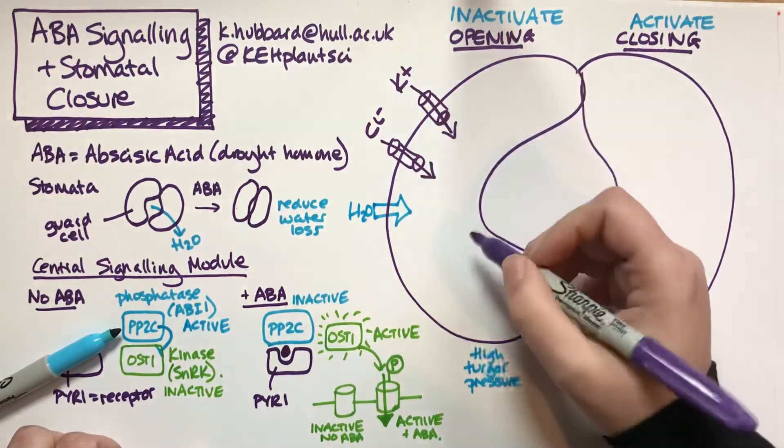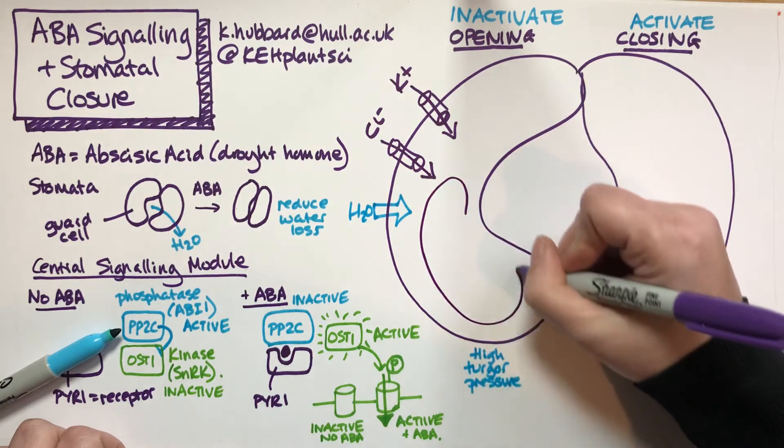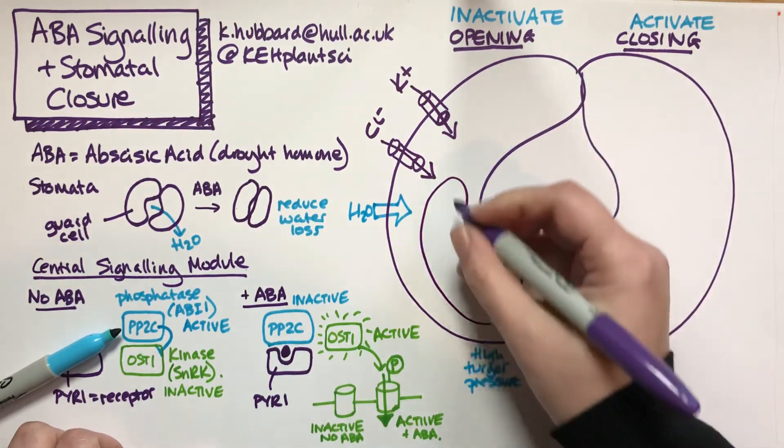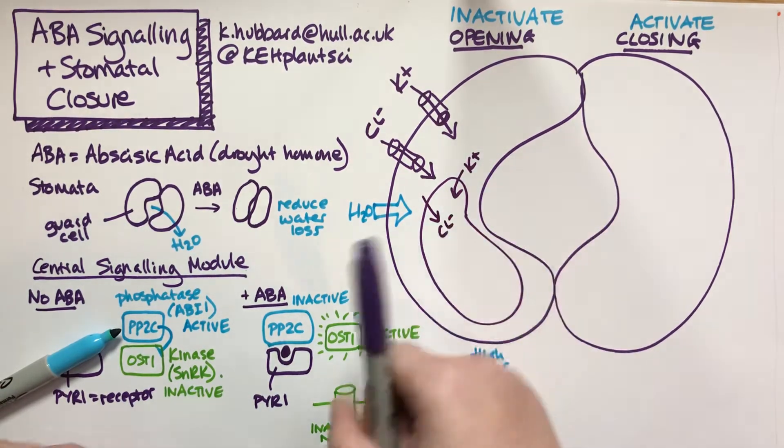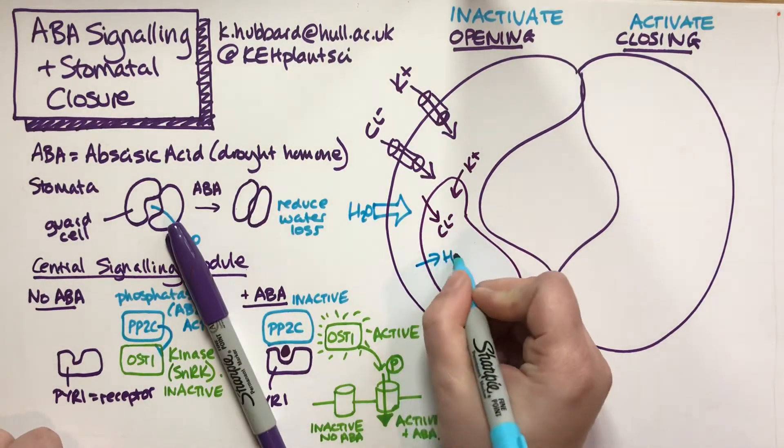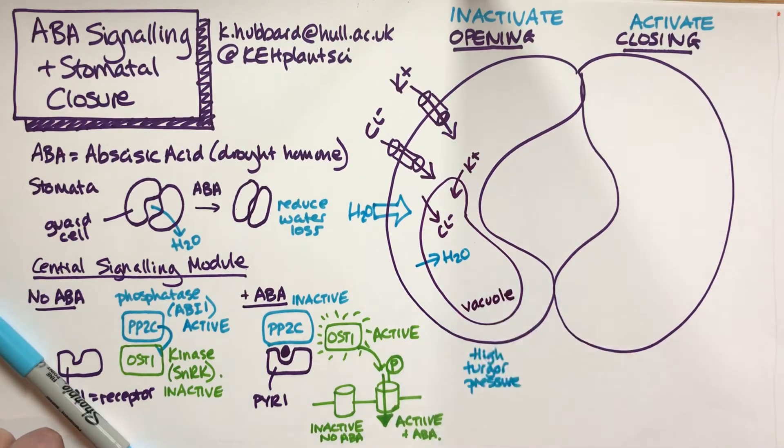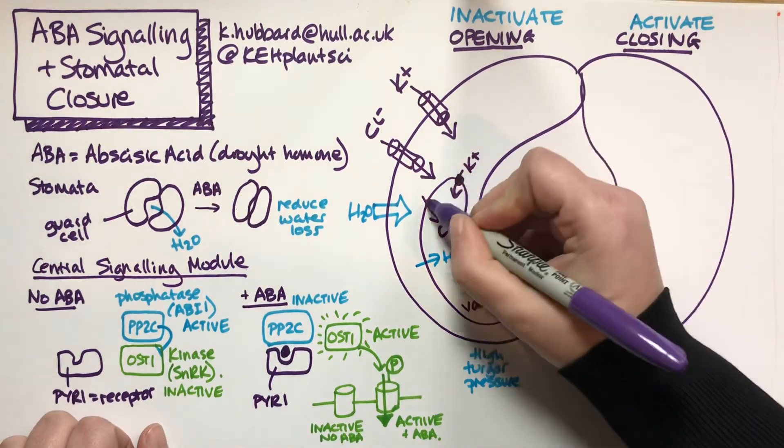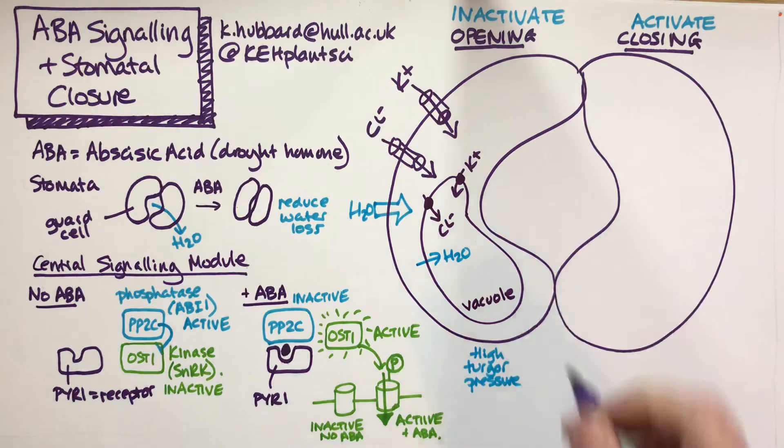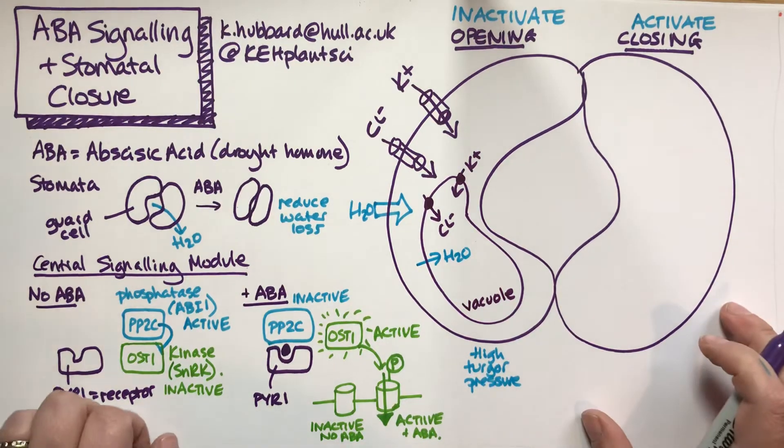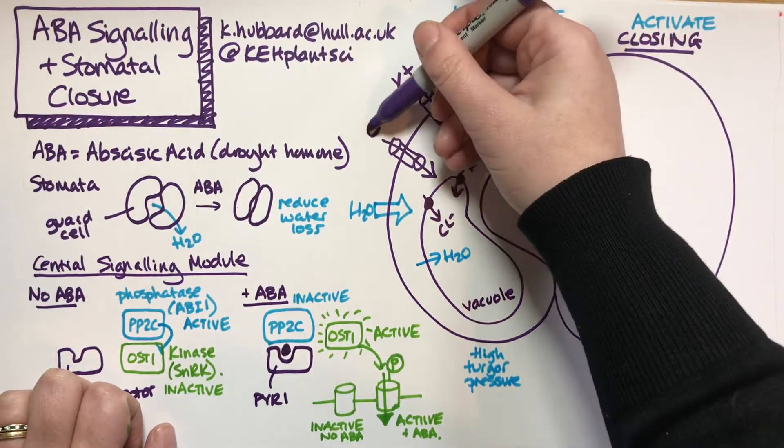The chloride and potassium will actually go into the vacuole, as will the water. Most of this will accumulate in the vacuole. We know less about the transporters at the vacuole, so I'm just going to think about the transporters at the plasma membrane, but don't forget that all of this stuff is going into the vacuole. These processes we need to inhibit: we need to stop potassium coming in and stop chloride coming in.